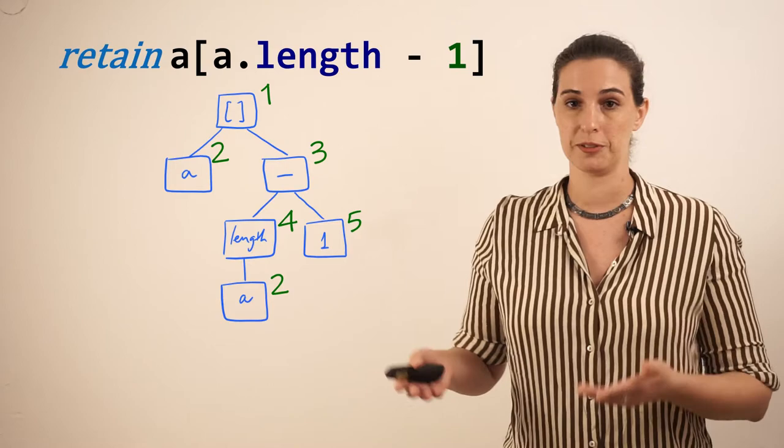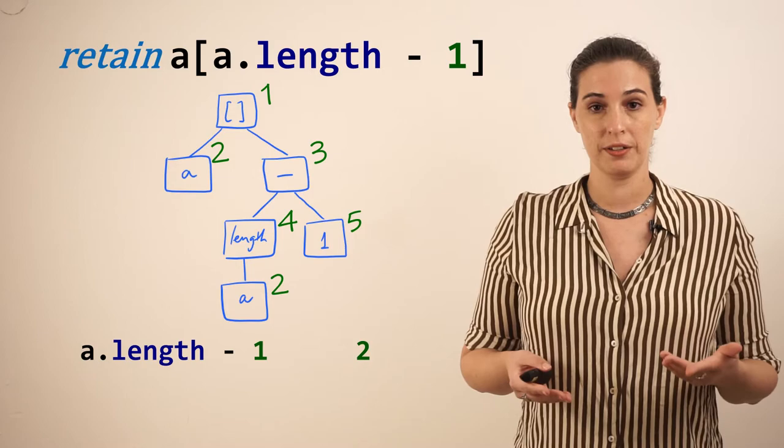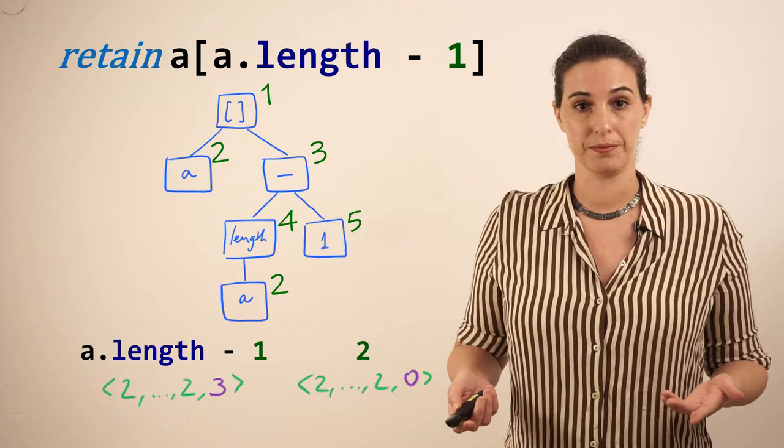So for a.length minus 1, the retain component will give us 3, whereas 2 will get 0.